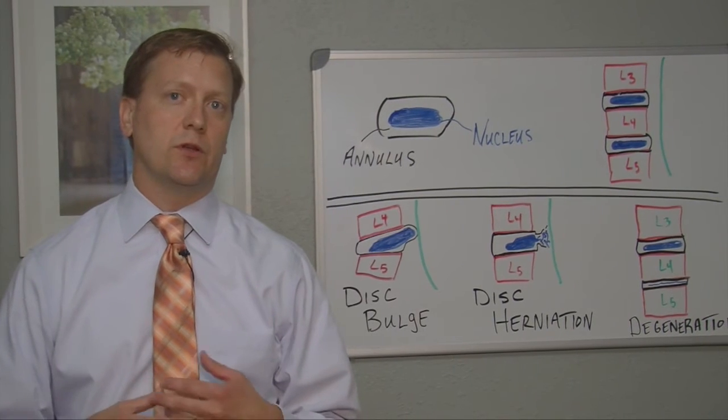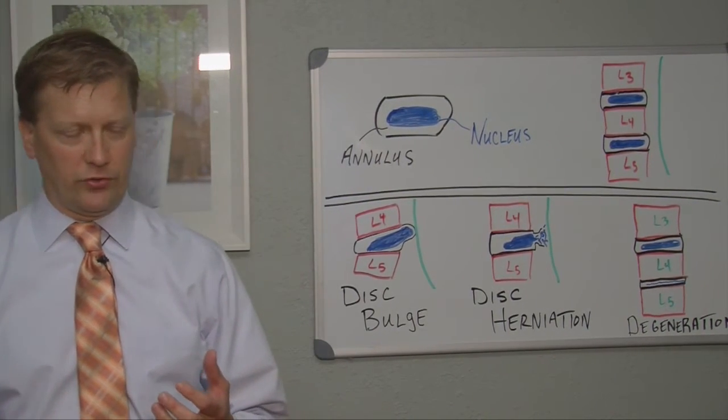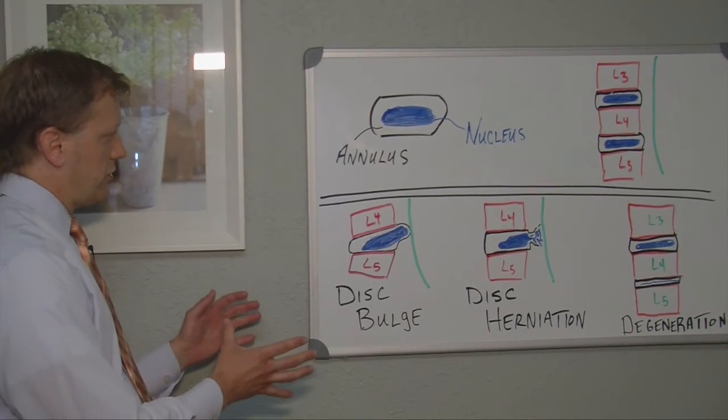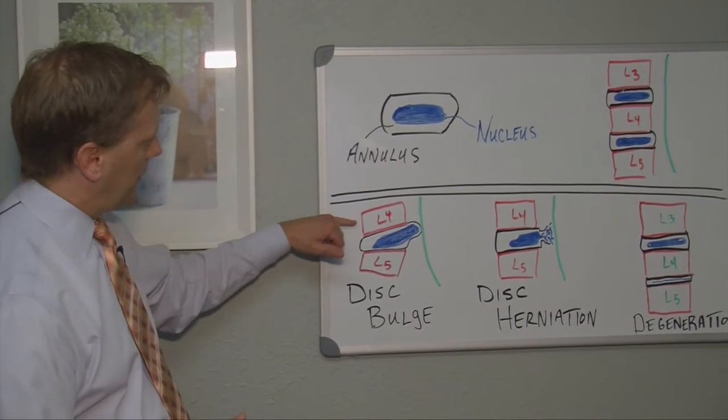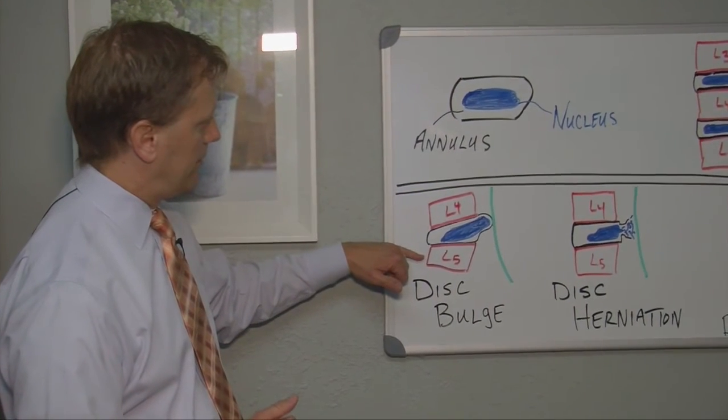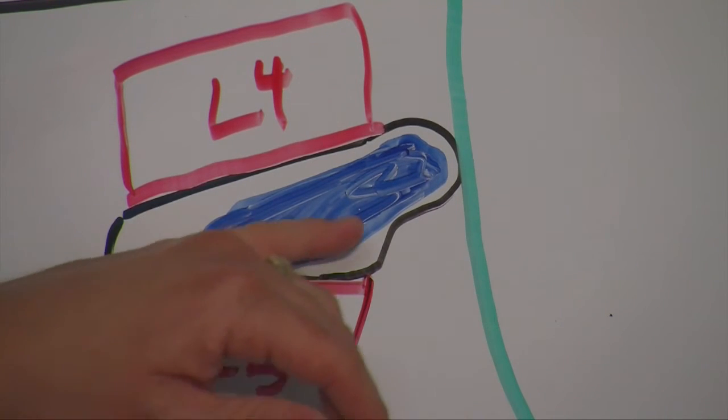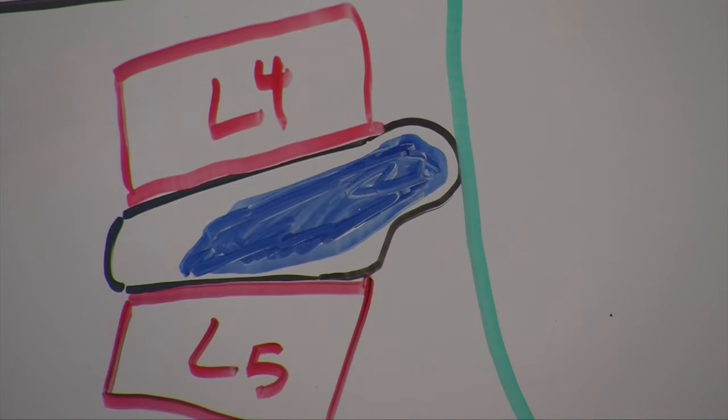So what's a disc bulge? If we look at our picture here, we've got lumbar level vertebra number four, lumbar level vertebra number five, with the disc in the middle of it. A disc bulge basically means the fluid has shifted to one side of the spine.